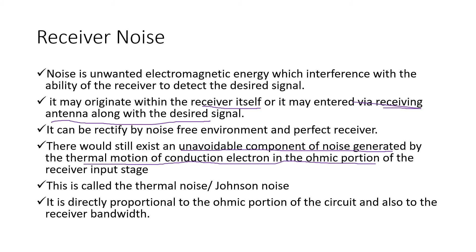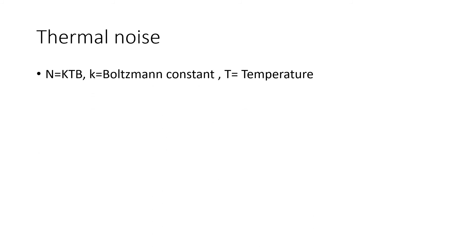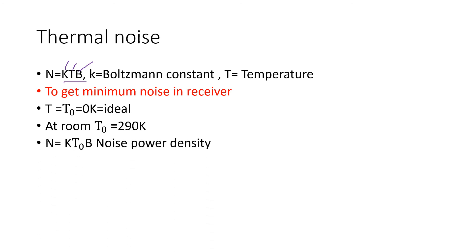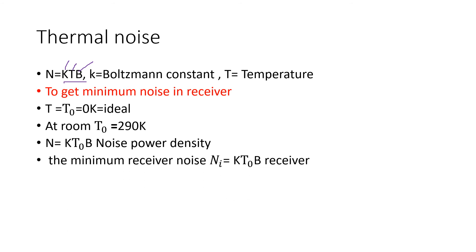The mathematical expression for thermal noise is N = KTB, where K is Boltzmann's constant, T is the temperature, and B is the bandwidth. To get minimum noise in the receiver, we take an ideal temperature of zero, which is not possible, but in practice we use room temperature of 290 K. So N = KT₀B is called the noise power density, and the minimum receiver noise is equal to KT₀B.